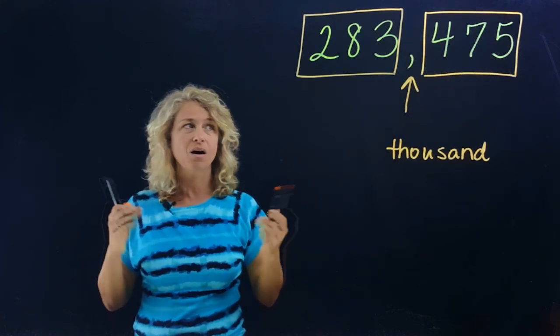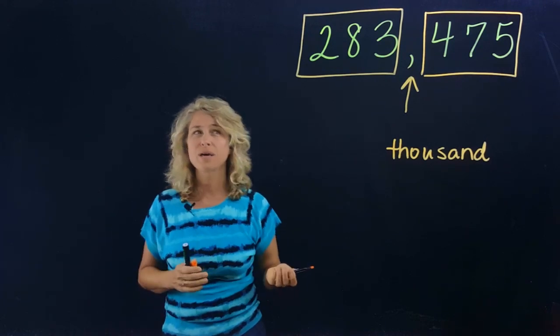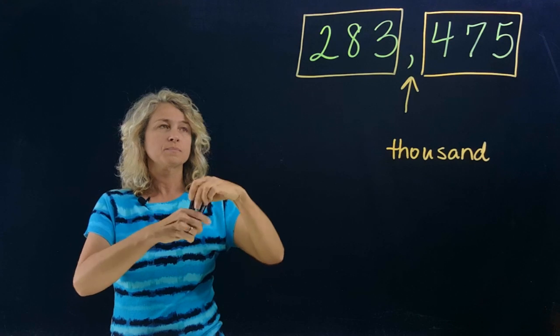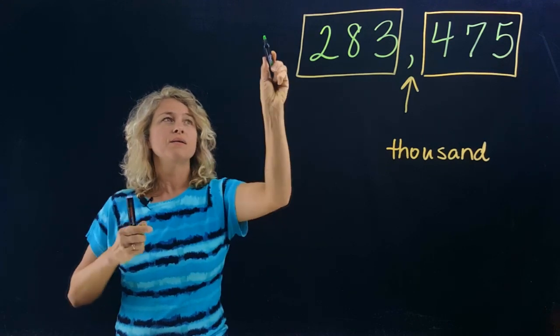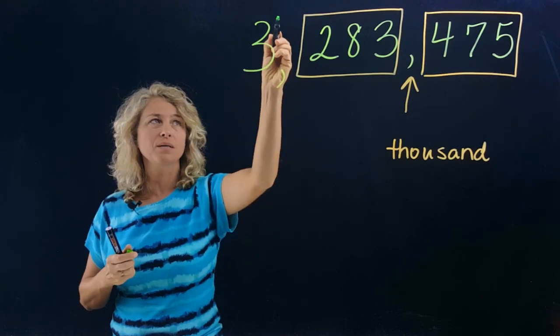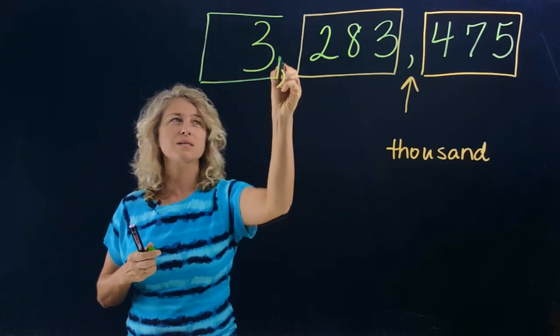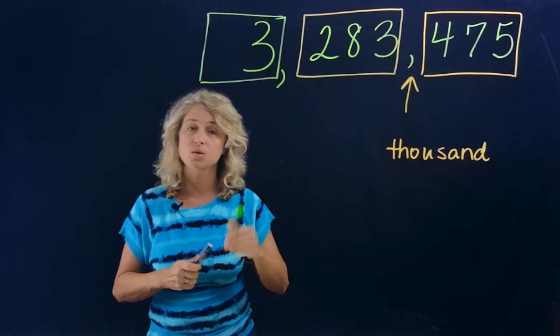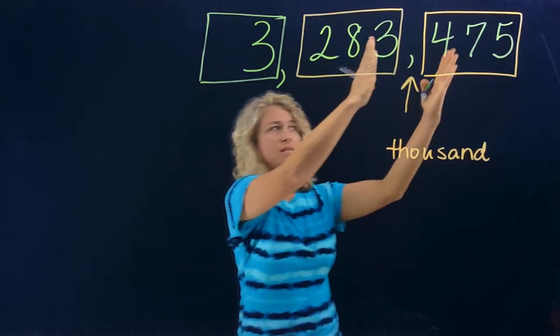That's it. All right, now what if we added another number over here? Let's add a three and an additional comma. We need another box, boys and girls. These boxes represent periods.